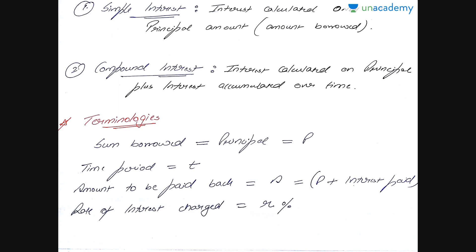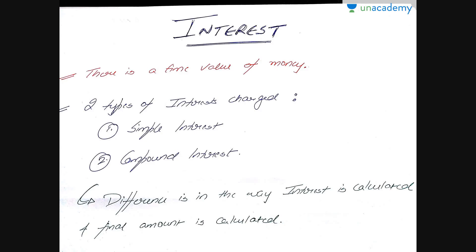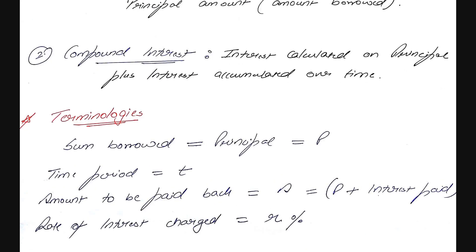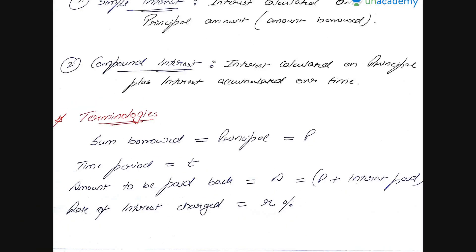There's another type called compound interest, which is calculated on the principal plus the interest accumulated over time. You take 100 rupees at 10% compounded annually. A year from now it grows to 110 rupees. Two years from now it's 10% of 110 — not 100 anymore — so 110 plus 11, which is 121 rupees. At the end of the third year it would be 121 plus 10% of 121, which is 133.1, and so on. That is what compound interest means.